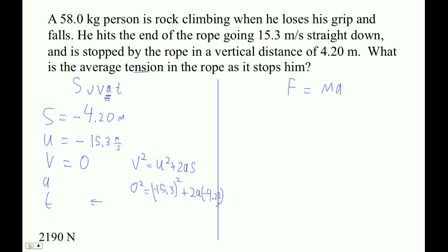All right, so let's see. This is going to come out positive, because I'm going to put this guy on the other side. It'll be negative, then we get rid of the negatives. So it's going to be 15.3 squared divided by 2 divided by 4.2. Acceleration is positive 27.868.